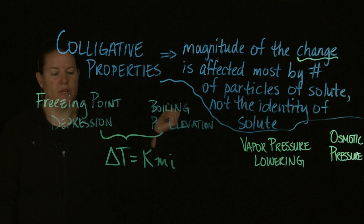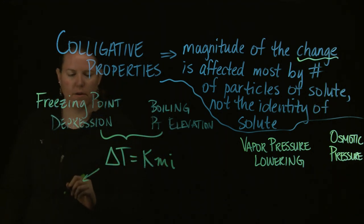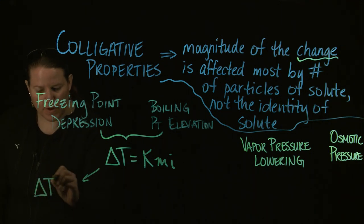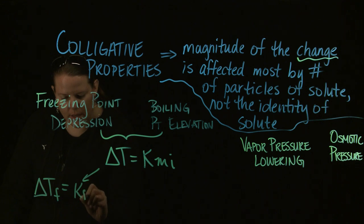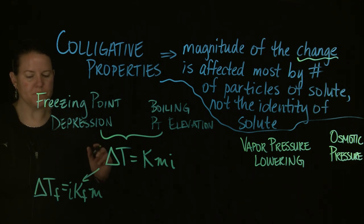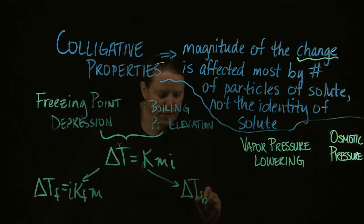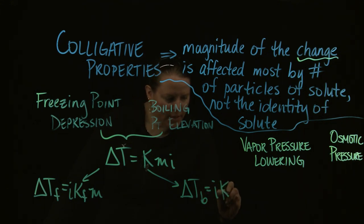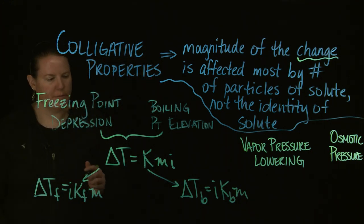Specifically for freezing point depression: ΔTF = KF × molality × i. For boiling point elevation it's the exact same formula, i × KB — it's a different constant based off of boiling point as opposed to freezing point.